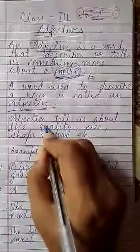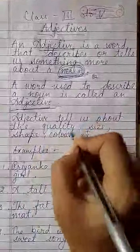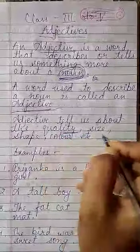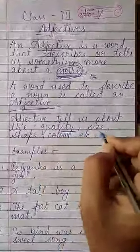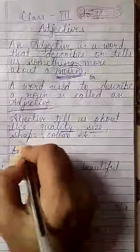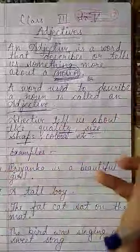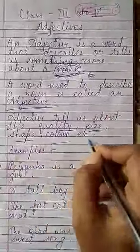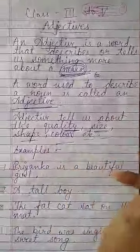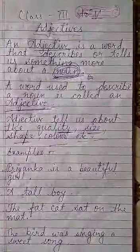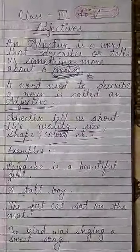Adjective tells us what the noun is like — its quality, size, shape, and color. It tells us about all these things.